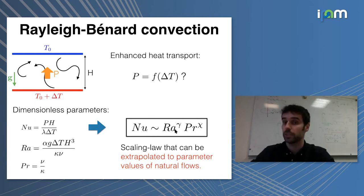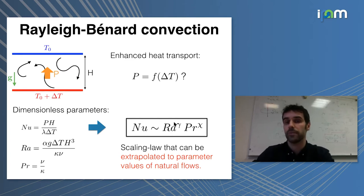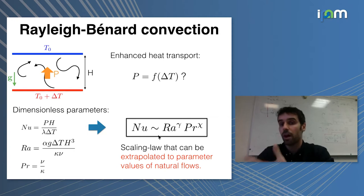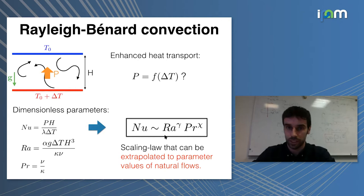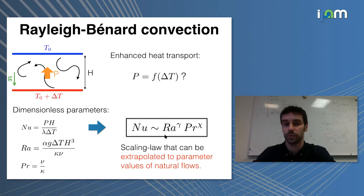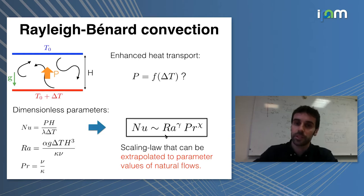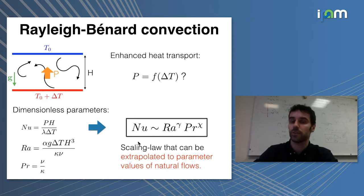How does the Nusselt number increase as we increase the Rayleigh number? We'll typically be looking for power-law behavior for Nusselt as a function of Rayleigh, with the goal of having a scaling law that we can extrapolate to the extreme values of Rayleigh number encountered in natural flows — for instance, astrophysical or geophysical flows. We'll be interested mostly in this exponent γ: as I increase ΔT, how is the heat flux going to increase?